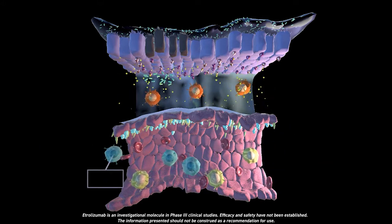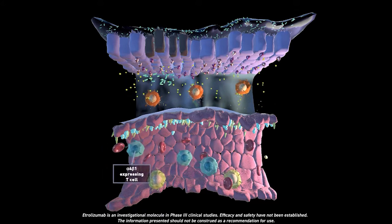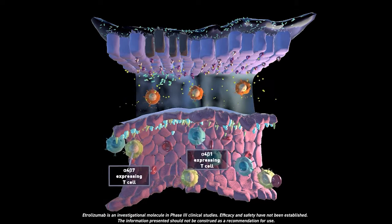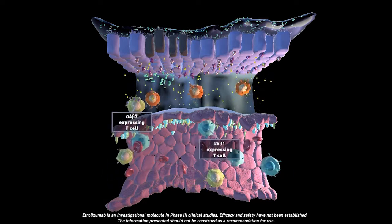Alpha-4-beta-7 and alpha-4-beta-1 expressing T cells traveling in blood vessels bind to the MADCAM1 and VCAM1, respectively, on the surface of blood vessel cells.